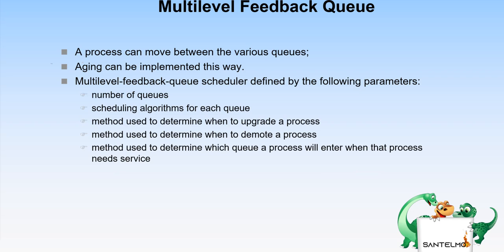The multi-level feedback queue scheduler is defined by the following parameters: the number of queues, the scheduling algorithms for each queue, the method used to determine when to upgrade a process, when to demote a process, and the method used to determine which queue a process will enter when it needs service.